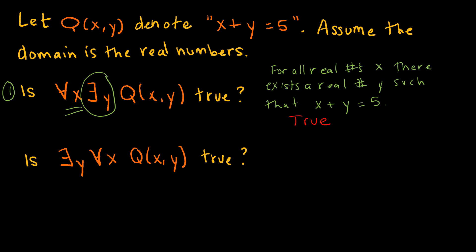For all real numbers — for instance, 2: what number could I add to 2 to get 5? That's 3. What about 1/2? 1/2 plus what equals 5? We're dealing with any real numbers, so 1/2 plus 9/2 equals 5. So that is always going to be true.